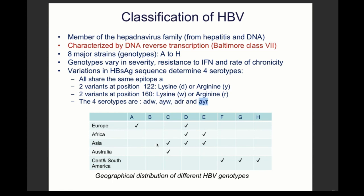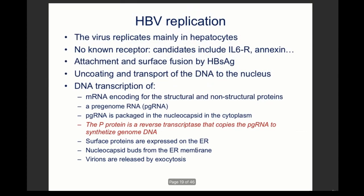Looking at the geographical distribution, each part of the world tends to have two different genotypes from A to H. For example, in Europe you find the A and D serotypes. The distribution varies by region across the world.